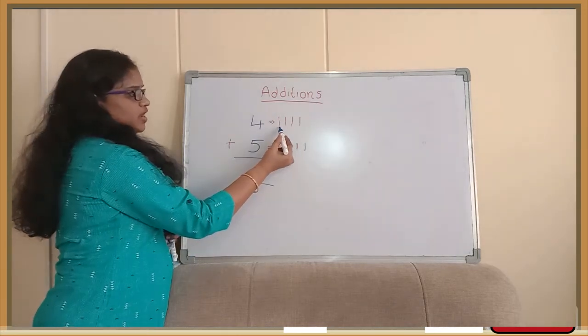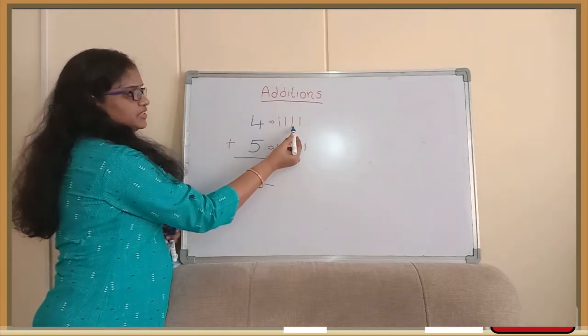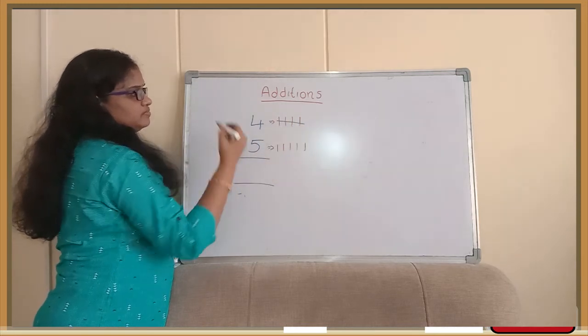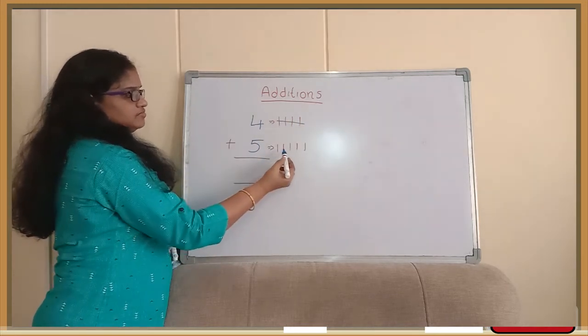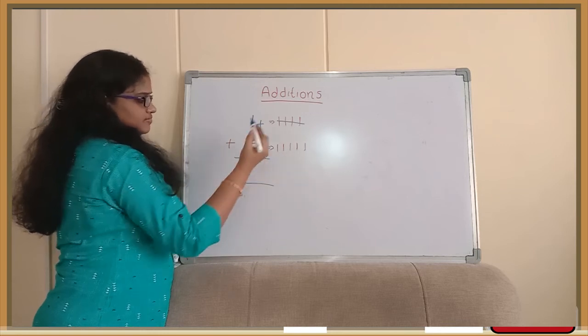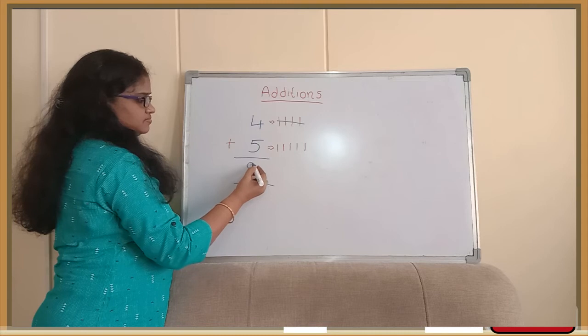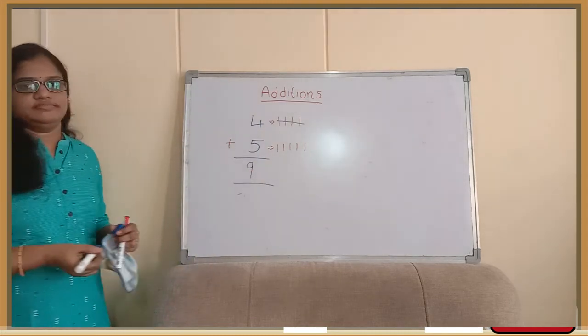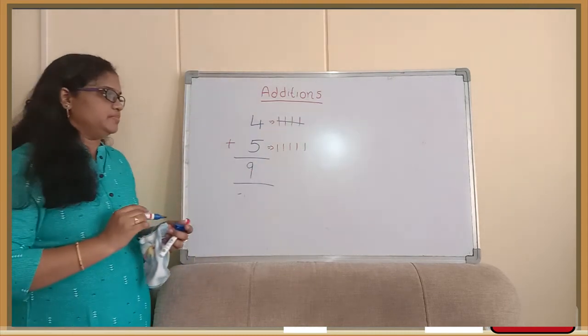Let's count. 1, 2, 3, 4, 5, 6, 7, 8 and 9. So total is, the number is 9. This is a very simple process.